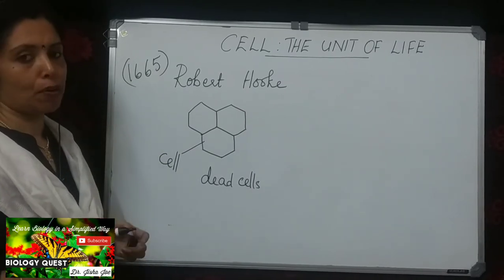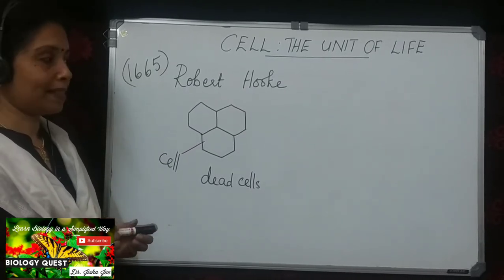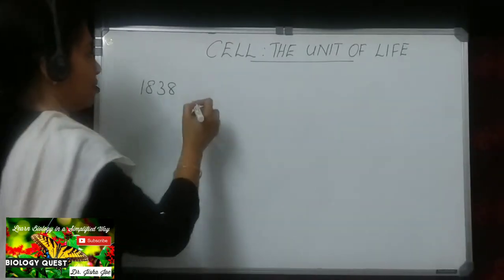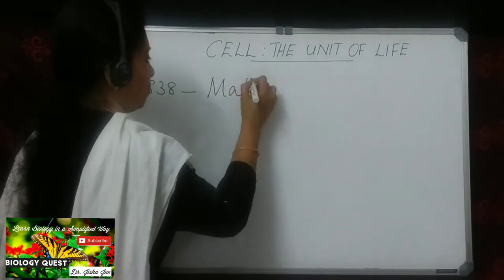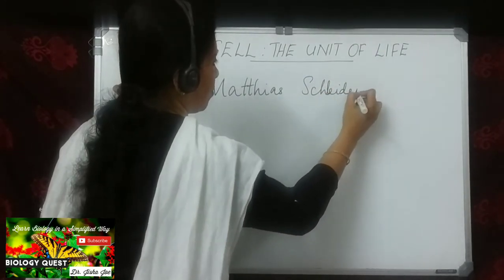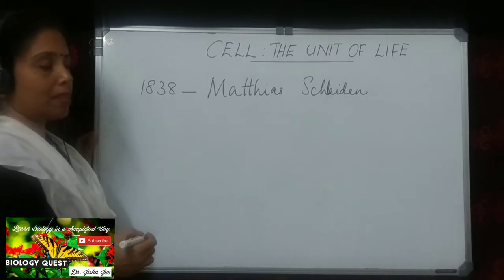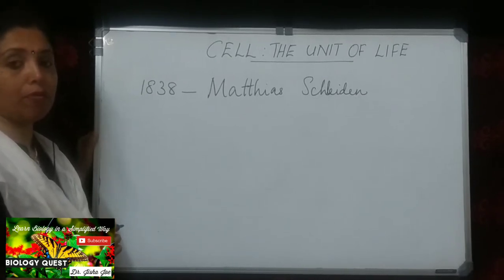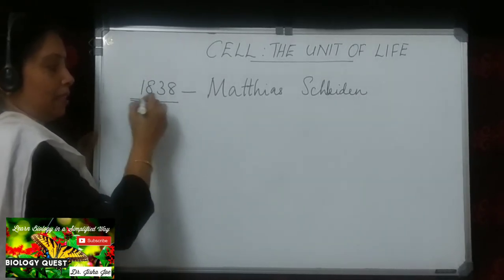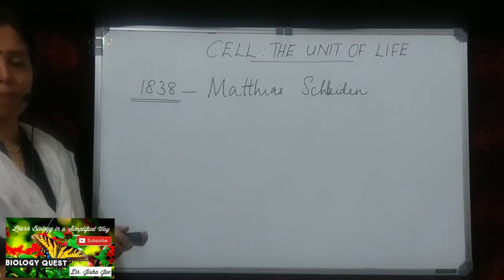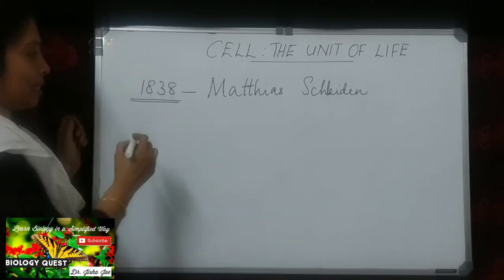In 1838, a German botanist named Matthias Schleiden found that all plants are made up of cells.